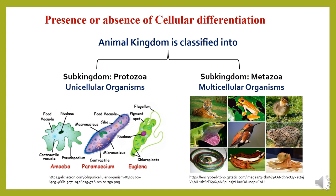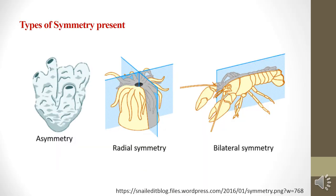The animal kingdom is classified into unicellular organisms such as sub-kingdom Protozoa, and multicellular organisms such as sub-kingdom Metazoa. Multicellular organisms are structurally and functionally different but possess certain common fundamental features. The cells of the Metazoa are not capable of independent existence and exhibit division of labor.